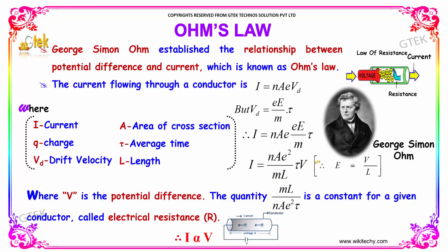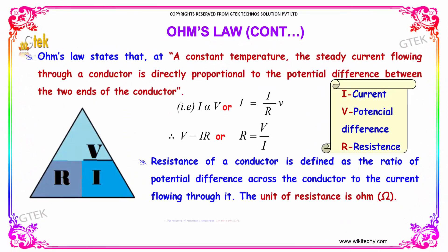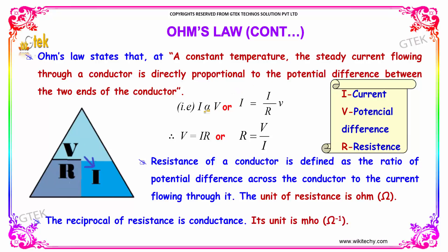I is directly proportional to the potential difference V. The current at constant temperature, the steady current flowing through a conductor is directly proportional to the potential difference between the two ends of the conductor.